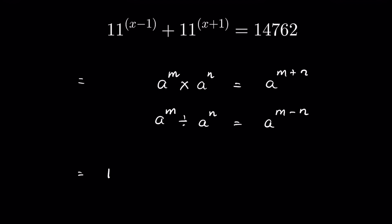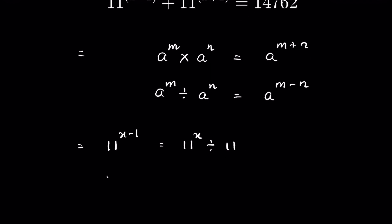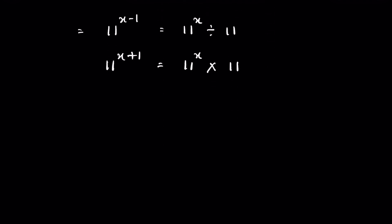11 raised to the power x minus 1 means 11 raised to the power x divided by 11 raised to the power 1, or just 11. Similarly, 11 raised to the power x plus 1 is equal to 11 raised to the power x times 11.